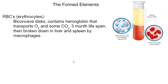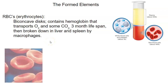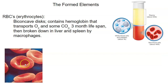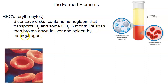Let's look at the formed elements more carefully. Red blood cells are called erythrocytes. They have a biconcave disc shape — like a frisbee that's concave on both sides. This allows oxygen to be carried closer to the hemoglobin, increases surface area, and gives red blood cells flexibility as they travel through the capillaries. Red blood cells transport oxygen and carbon dioxide to and from body tissues. Red blood cells live for about three months and are then broken down in the liver and spleen by macrophages.